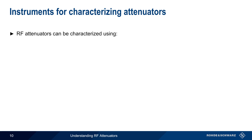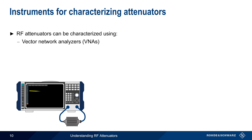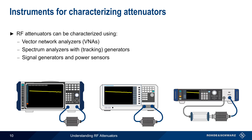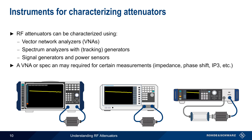Regardless of type, RF attenuators are usually characterized or measured using three main types of instruments. Vector network analyzers, or VNAs, are the most common and the most flexible choice. But scalar network analysis of attenuators can be performed using spectrum analyzers with an internal or external generator. Similar measurements can also be made using an RF signal generator and an appropriate RF power sensor. Although all of these methods can be used to measure basic attenuator parameters, measuring some parameters — for example impedance, phase shift, or third order intercept — may require a certain instrument.